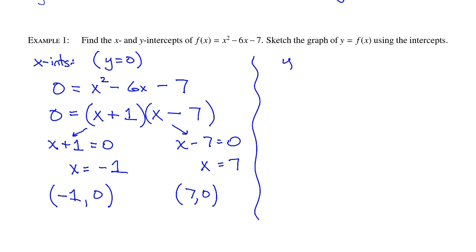Next, I want to find the y-intercept. And the y-intercept is where x is equal to 0. And that just means we're going to plug in 0 for x. So this is f(0), which is 0² - 6(0) - 7, which is -7. And that corresponds to the point (0, -7).